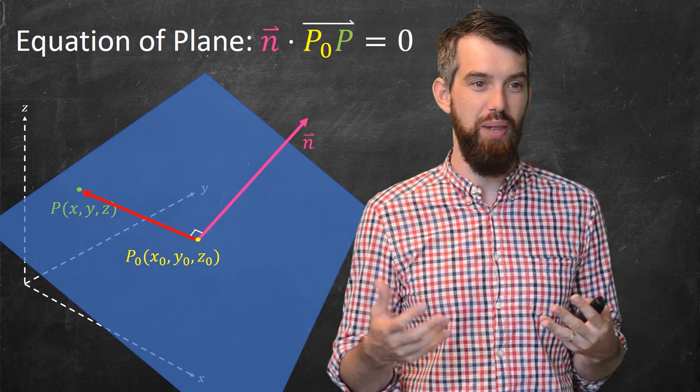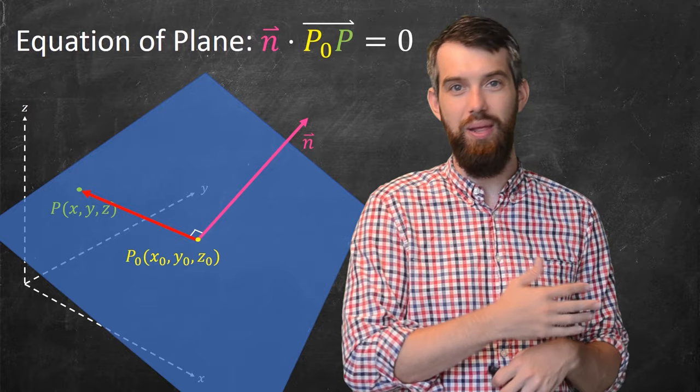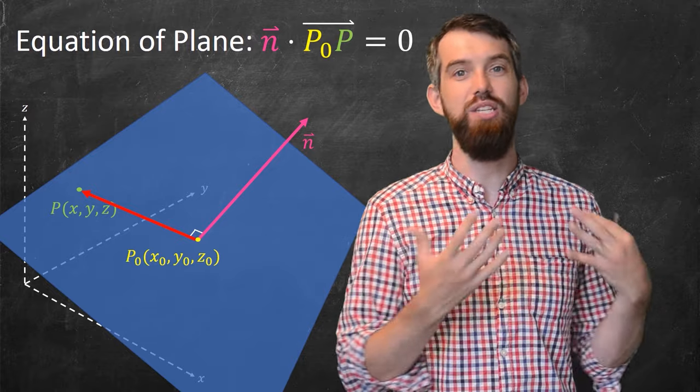So indeed, this is going to be my equation of the plane is that the normal dotted with any vector line in the plane, any P₀ out to P, is going to be equal to zero.